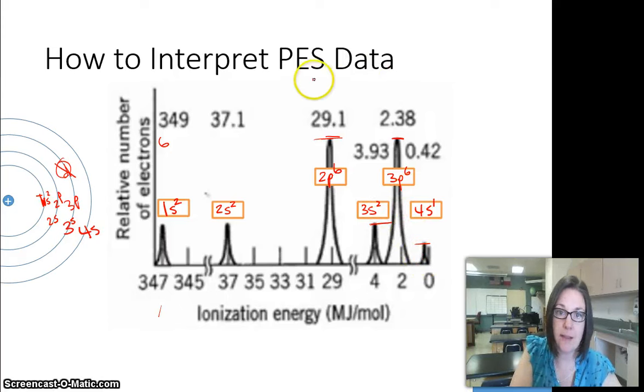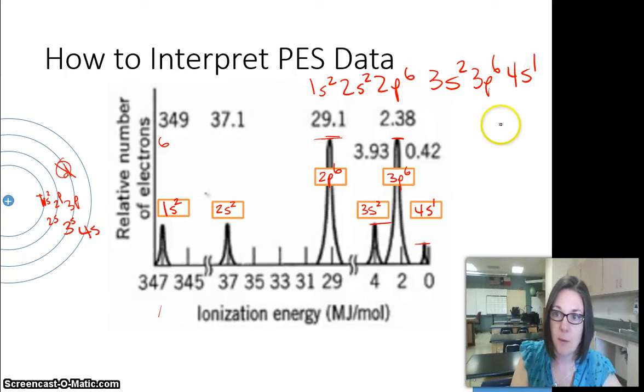So if we were to rewrite this, it would be 1S2, 2S2, 2P6, 3S2, 3P6, and 4S1. So that would be potassium.